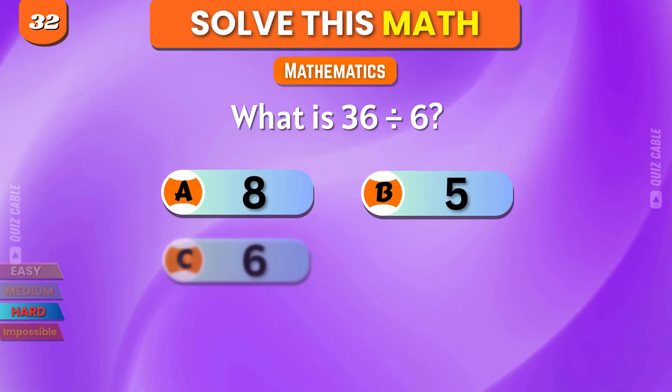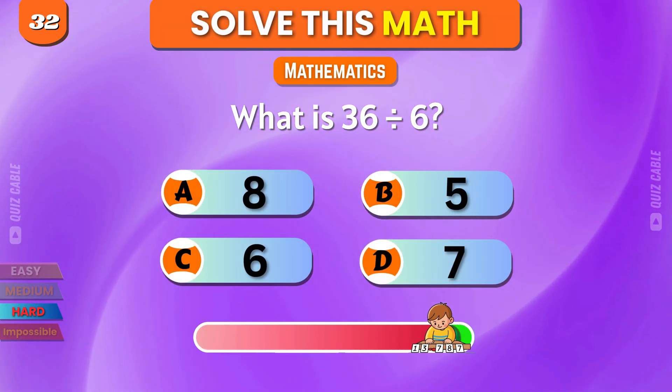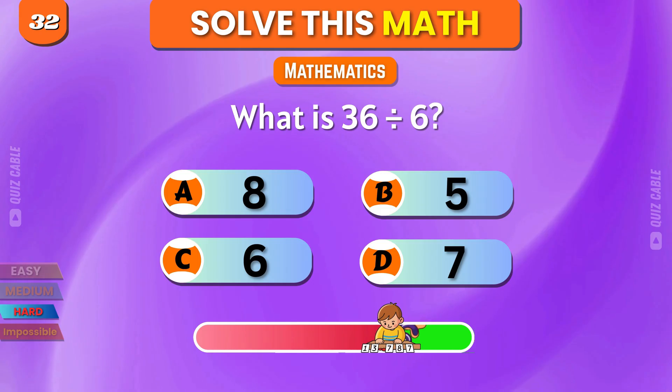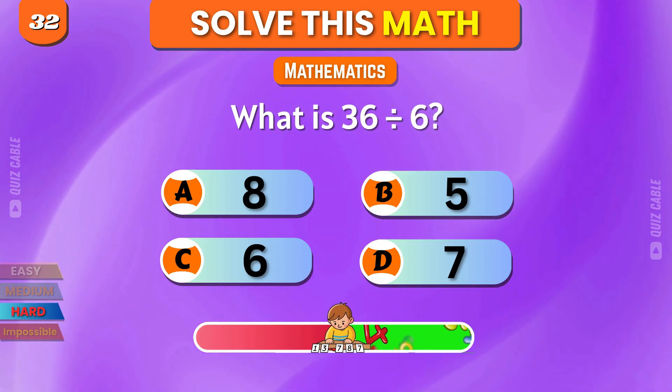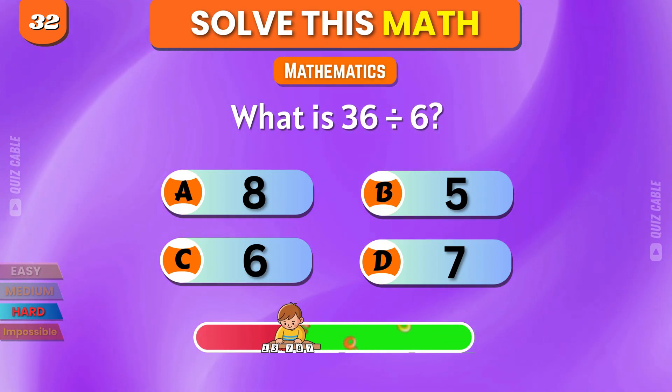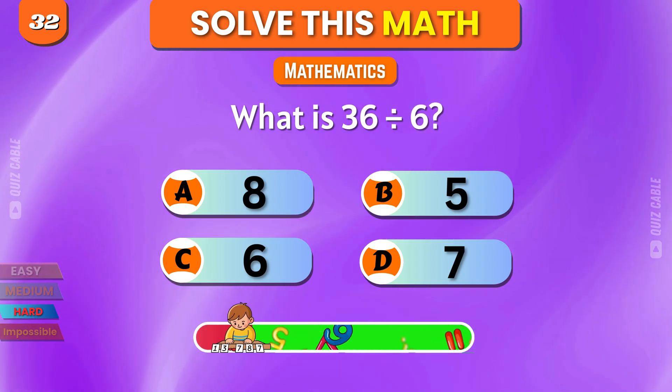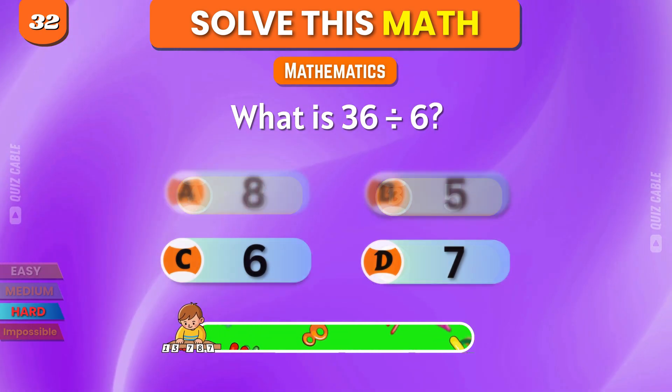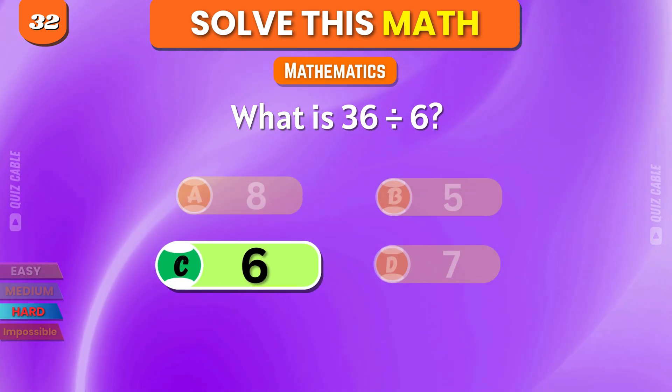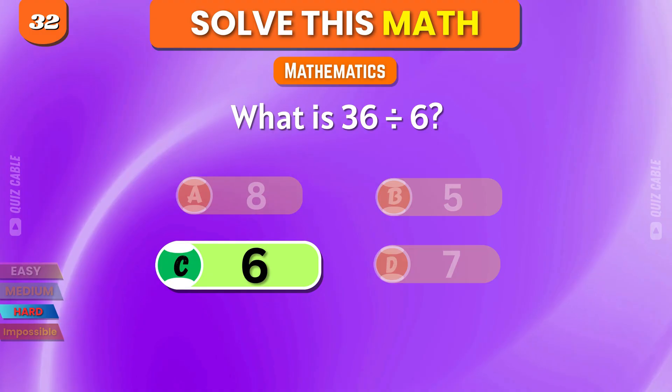What is 36 divided by 6? 8, 5, 6, 7. Correct, 6.